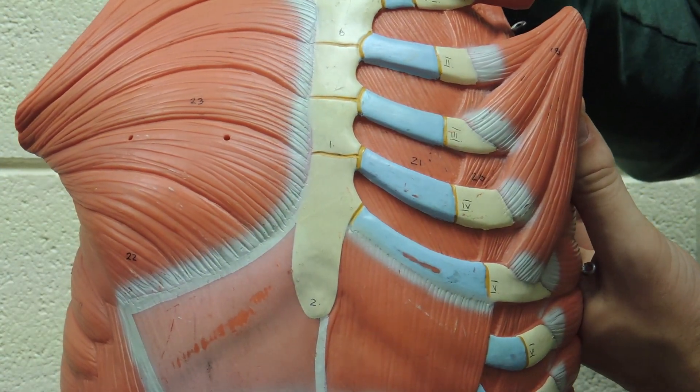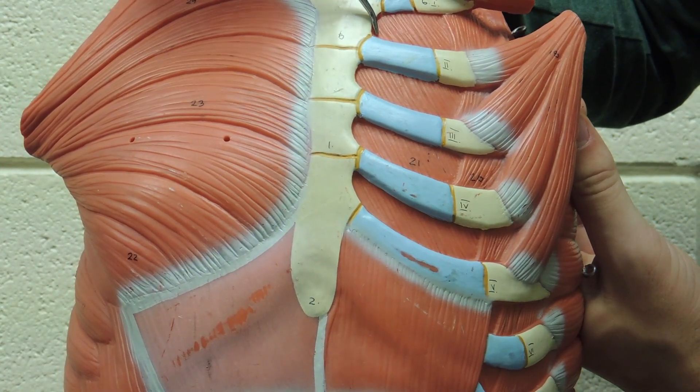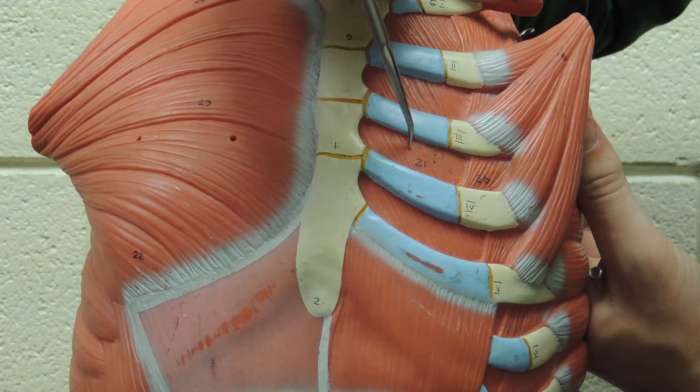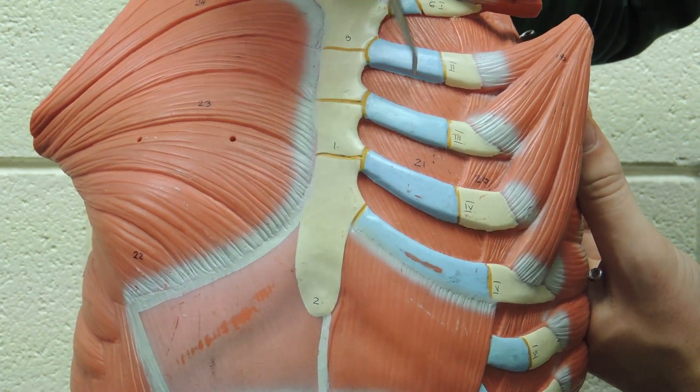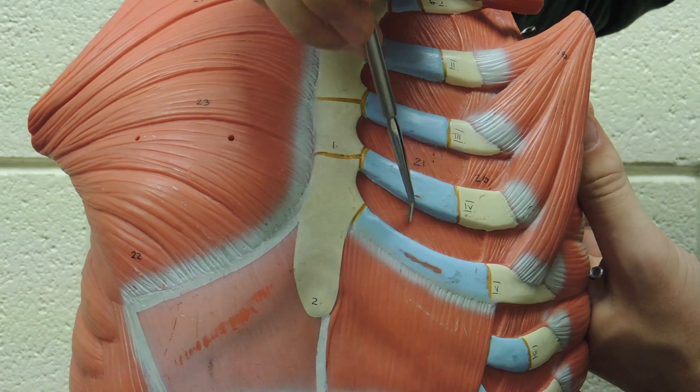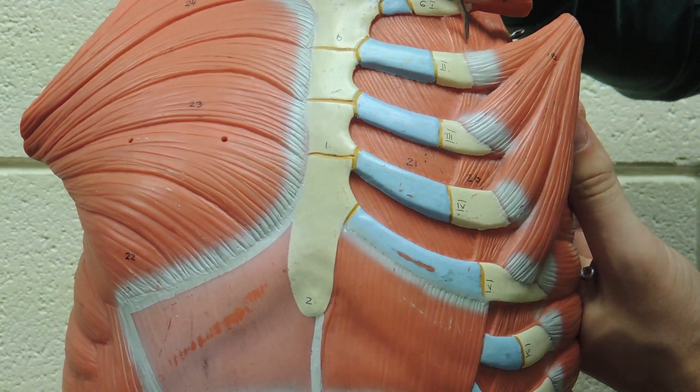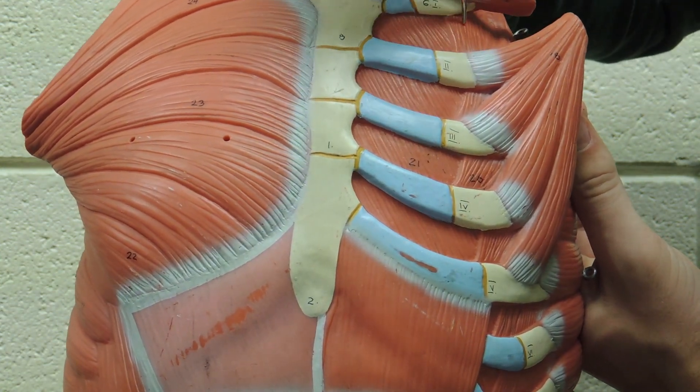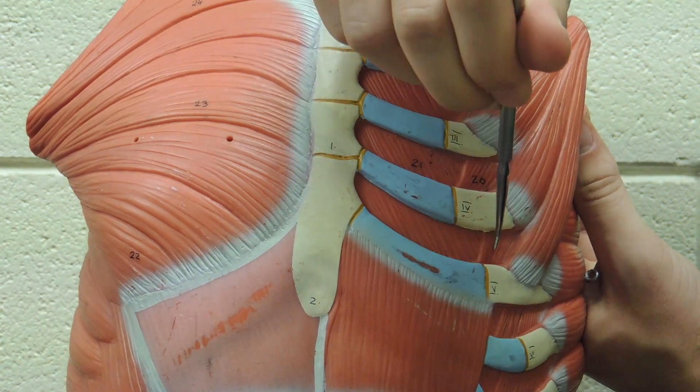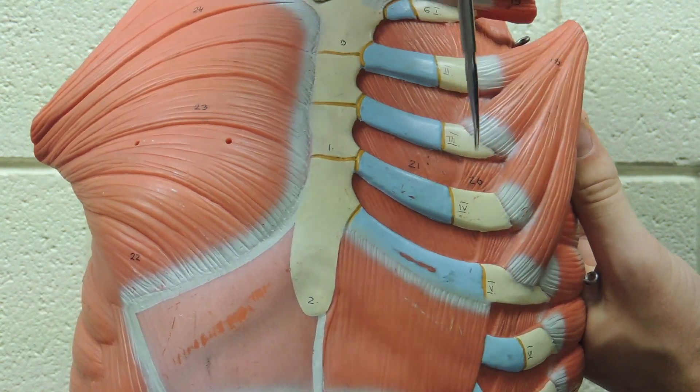For the intercostals, on the medial or internal side you have internal intercostals sitting in between each rib. Then sitting on top of it, or externally laterally, you have your external intercostals in between each rib.